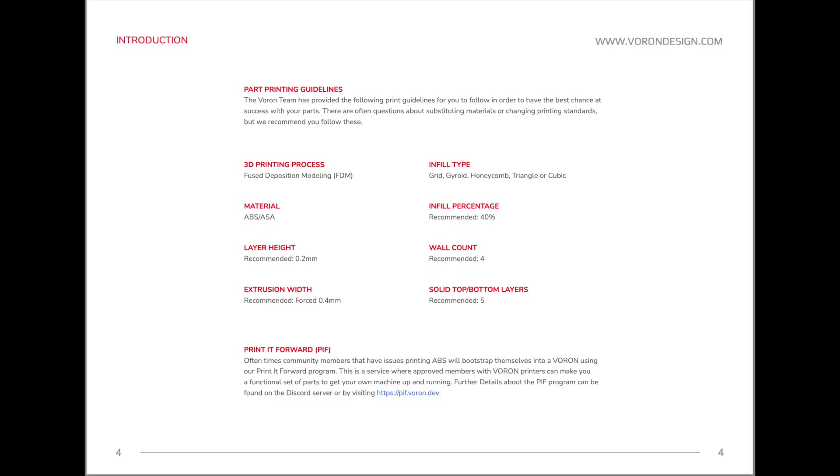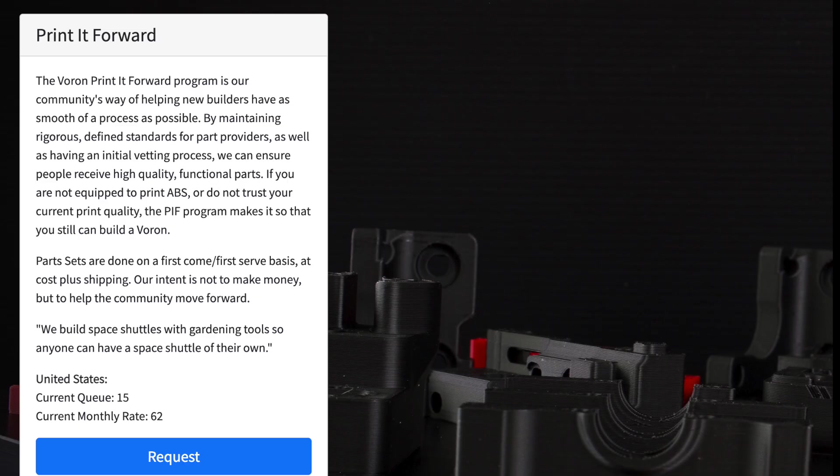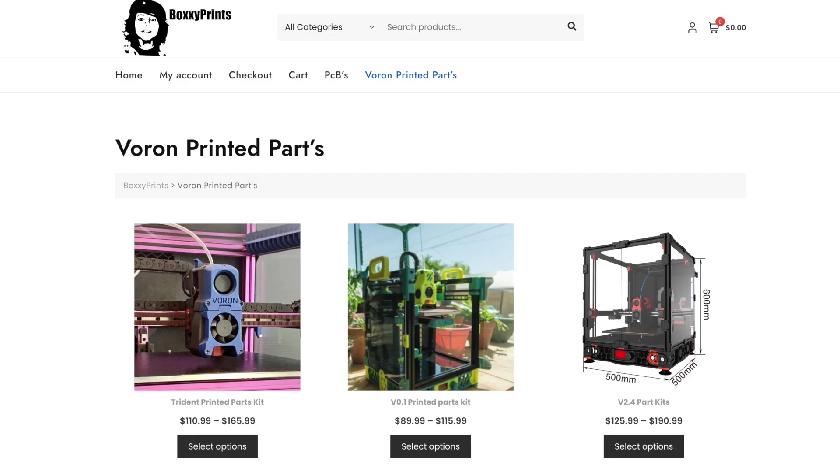The first part of the manual talks about part printing guidelines, and this is really important. If this is your first build, I would recommend going with the Voron PIF program or buying parts from BoxyPrints. I do have another video about the trade-offs with different options for printing parts.